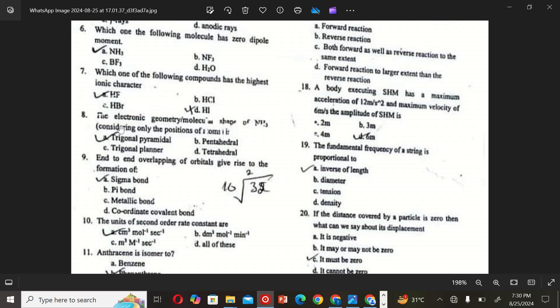The next MCQ is: End to end overlapping of orbitals gives rise to the formation of A: sigma bond, B: pi bond, C: metallic bond, and D: coordinate covalent bond. So the correct option is A.